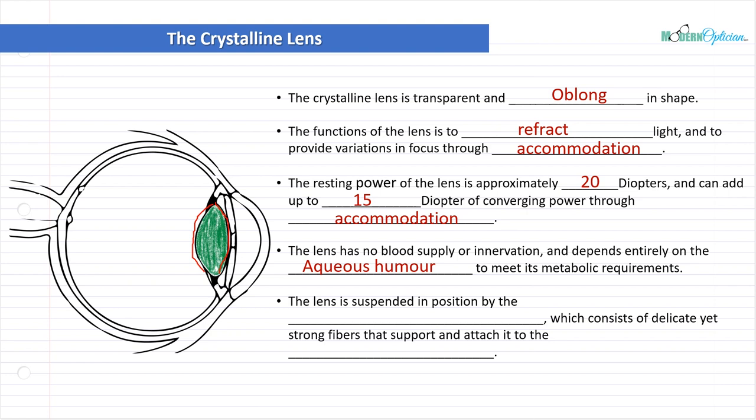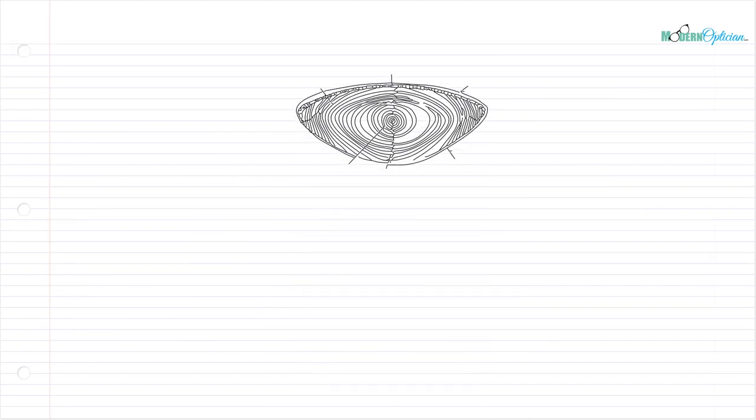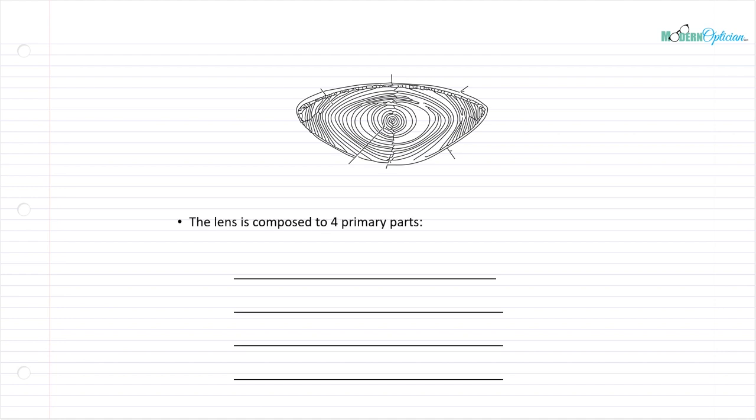The lens is suspended and positioned by the suspensory ligaments, which consists of delicate yet strong fibers that support and attach it to the ciliary muscle. It's all kind of blending together. Now we understand a little bit more about how the lens is suspended and what it can do. When we take a look at the lens itself, it's composed of four primary parts.